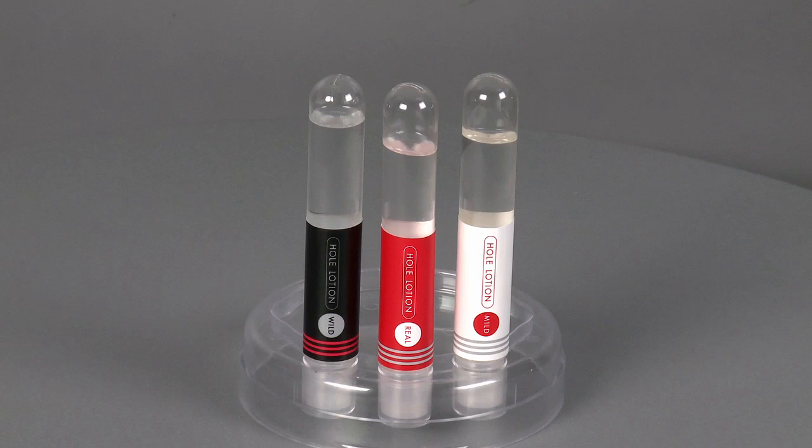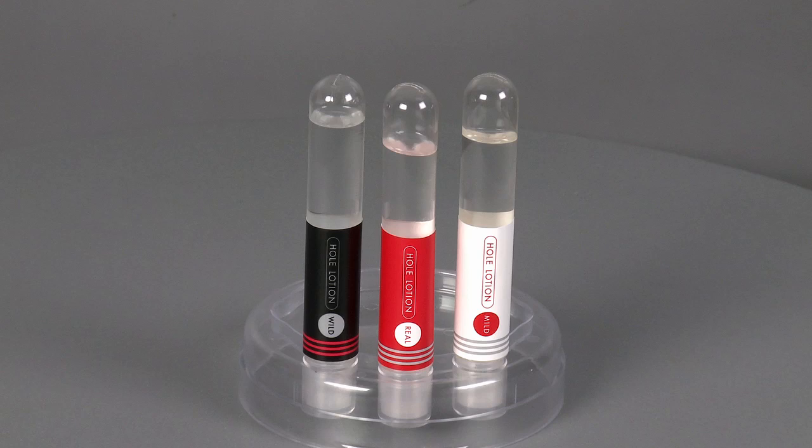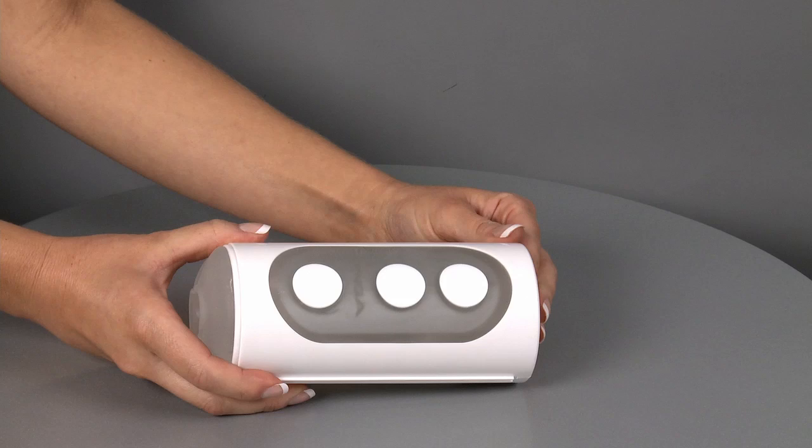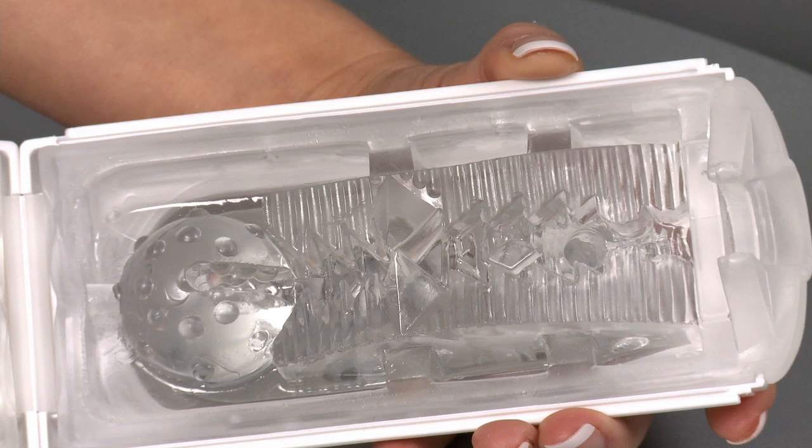And finally they all come with three different lubes for you to try: mild, real and wild. Now once we pop open the flip hole, you'll see that there's a wonderful textured thermoplastic elastomer canal, and it's this texture that makes each flip hole different.